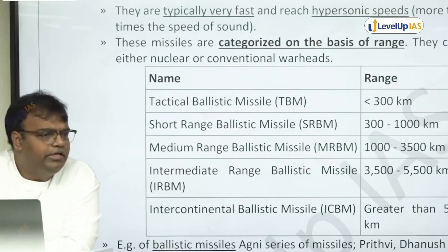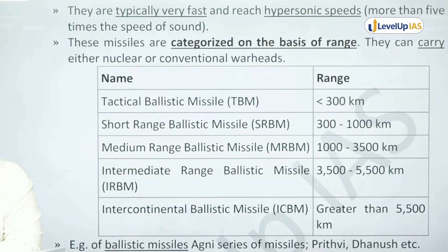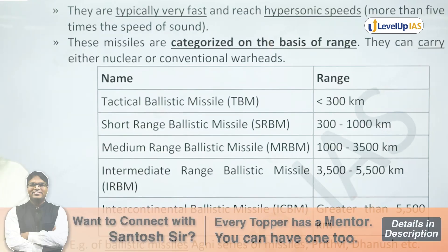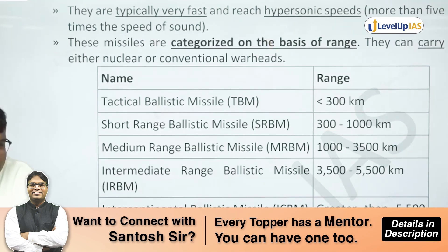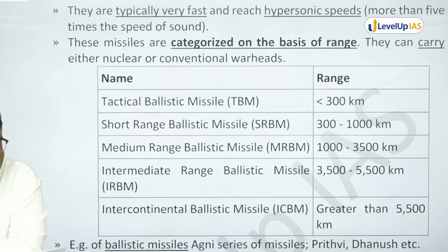These range boundaries are not rigid lines. For example, if you're going from Portugal to Africa, even a few hundred kilometers might be intercontinental. But as a standard definition, we call a missile an Intercontinental Ballistic Missile when its range is more than 5,000 to 5,500 kilometers. The definition we use is: ballistic missiles with a range of more than 5,500 kilometers.